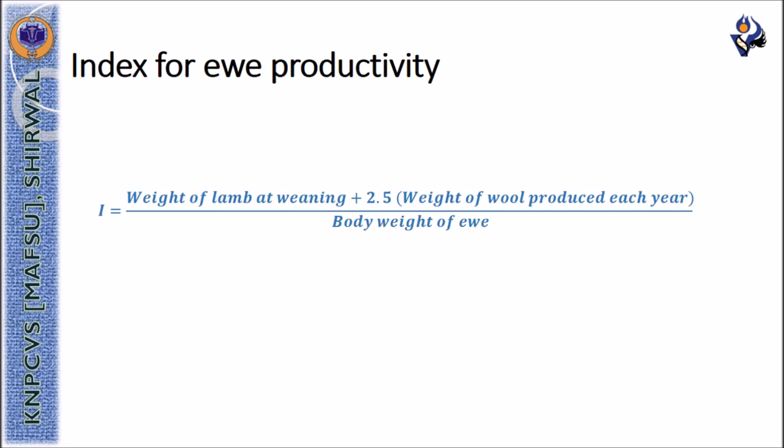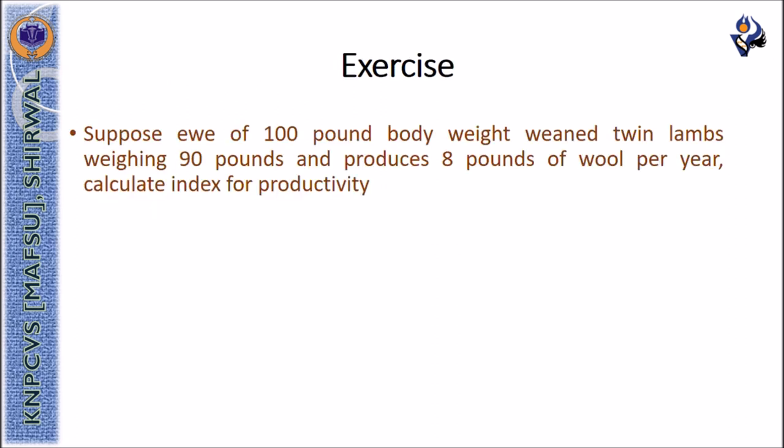The index for ewe productivity can be calculated with the formula weight of lamb at weaning plus 2.5 times the weight of wool produced each year divided by body weight of the ewe. Based on this, the exercise is to calculate the ewe index for productivity if the ewe of 100 pound body weight weaned twin lambs weighing 90 pounds and it has produced 8 pounds of wool per year. Thank you.